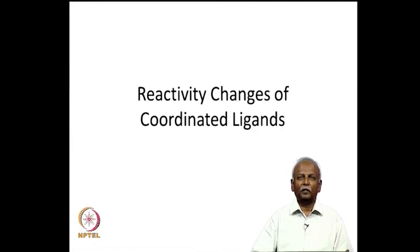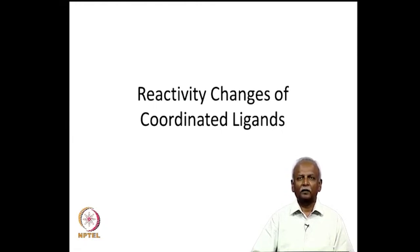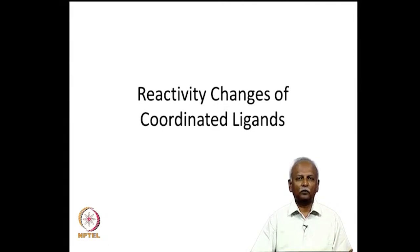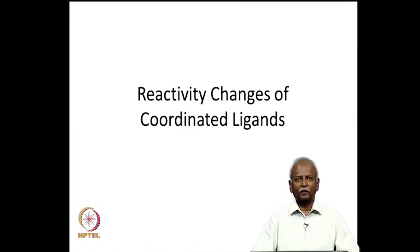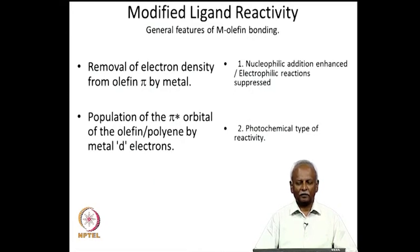Organometallic chemistry primarily involves the chemistry of organic fragments coordinated to the metal. When talking about the organic part of organometallic compounds, we notice that there are often changes in the reactivity patterns of the organic ligand. Today we would like to consider some of these changes and see if we can understand them on the basis of the electronic structure of the molecules. We will give a few examples and glean some principles behind these reactivity changes.